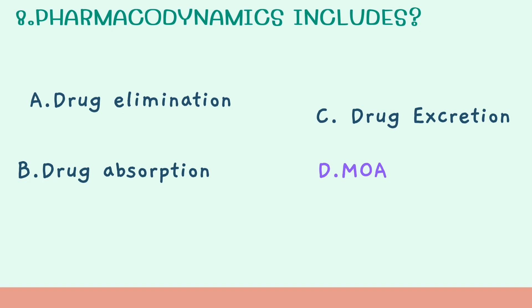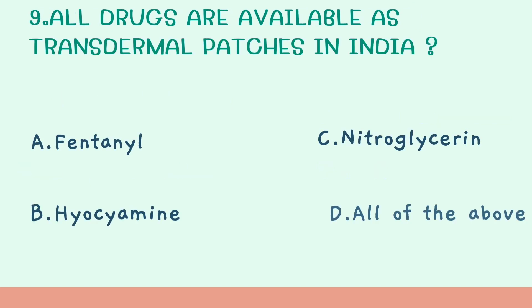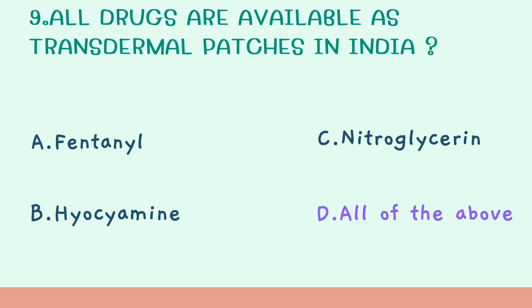Ninth question: which drugs are available as transdermal patches in India? Option A: Fentanyl. Option B: Nitroglycerin. Option C: Hyoscine. Option D: All of the above. The correct answer is all of the above. Fentanyl patches are used for pain. Nitroglycerin patches are used for angina. Hyoscine patches are used for motion sickness. All these drugs are available as transdermal patches in India.